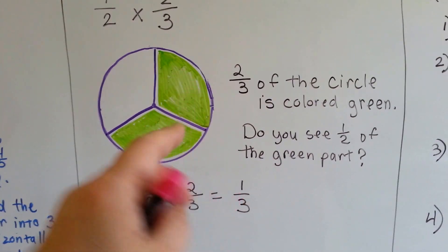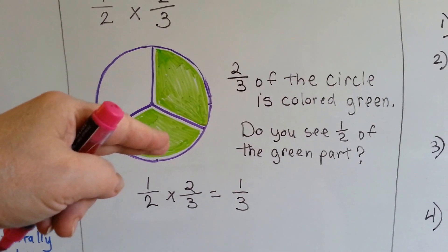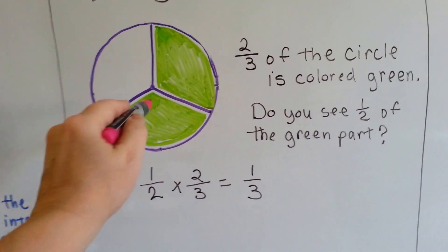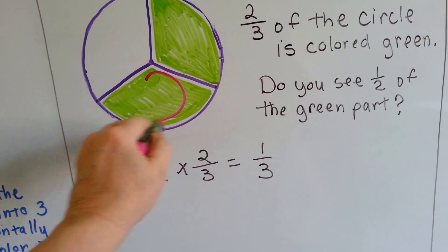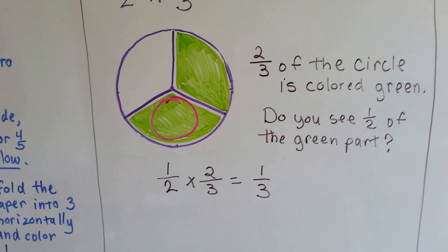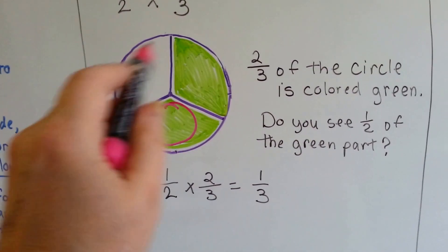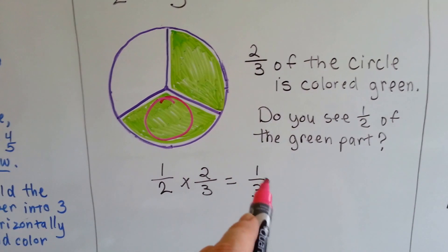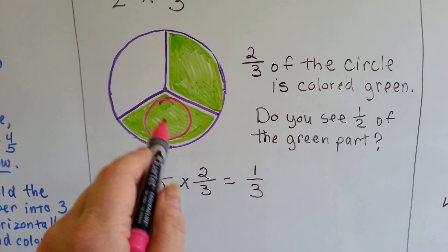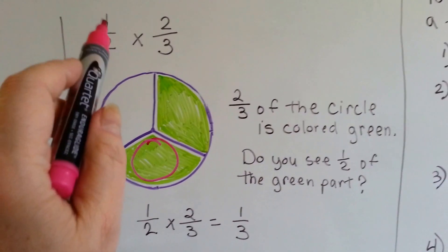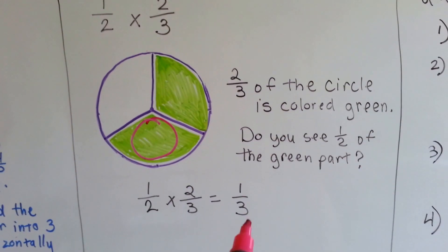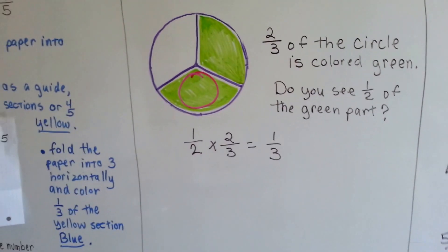Here's one part, here's the other part. One of them would be half of it. So if I chose this one as the half of the green part, how many of the whole circle did I choose? I chose 1 third. That's 1 third of the whole circle. So 1 half times 2 thirds is 1 third. That was kind of easy to see, wasn't it?